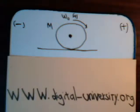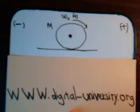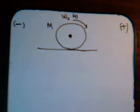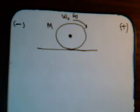This is video 34 in our series analytical mechanics. The playlist is at the website digital-university.org. In this video we're going to rely heavily on what we did in the previous two videos, 32 and 33, analyzing the motion of a billiard ball.